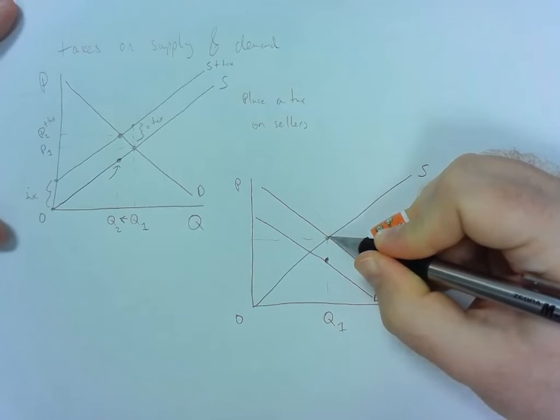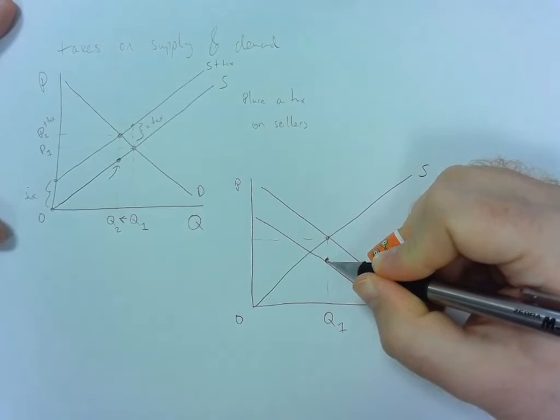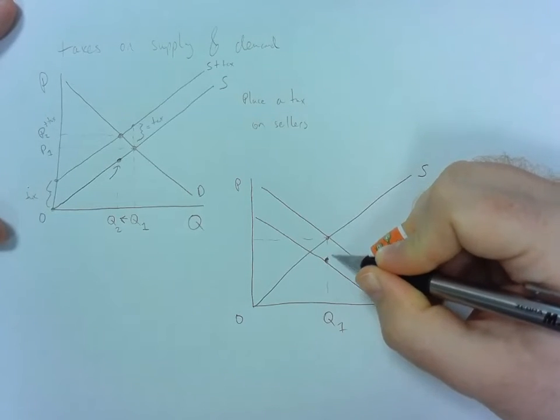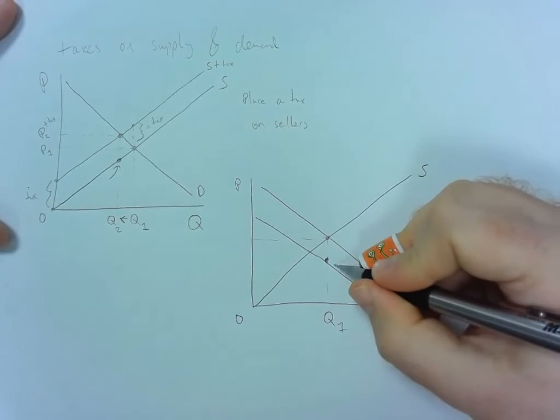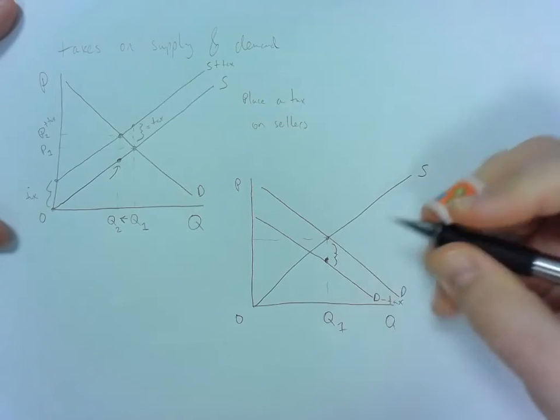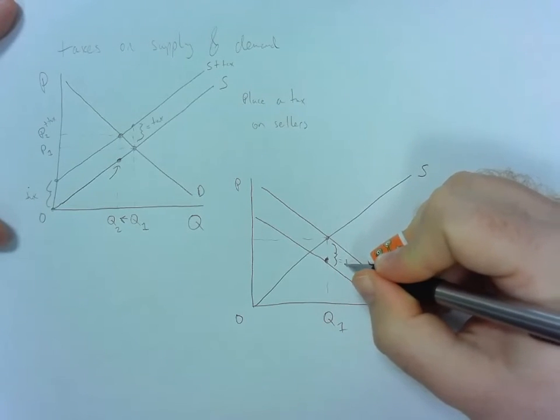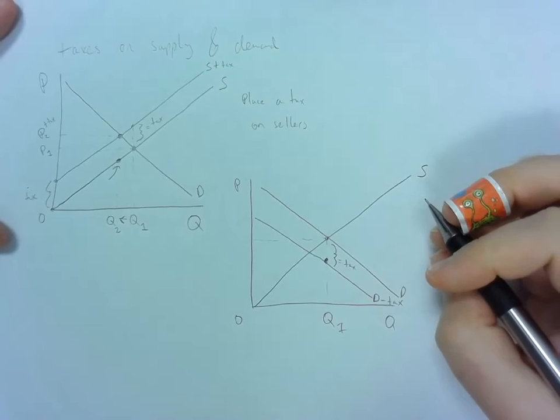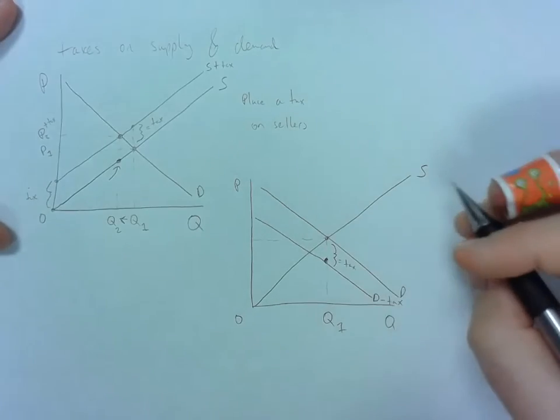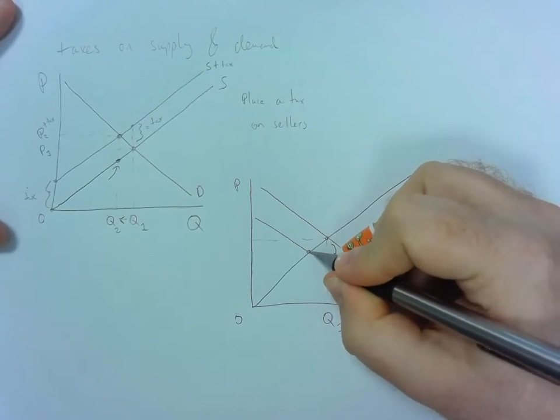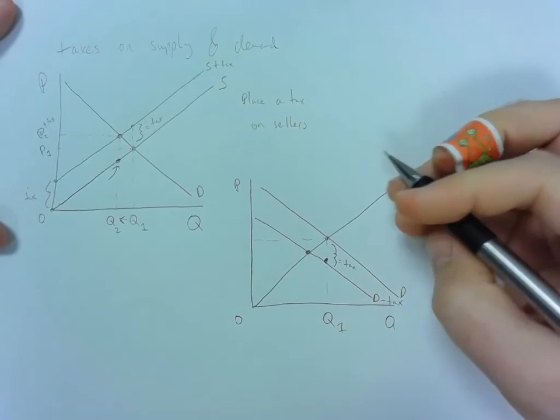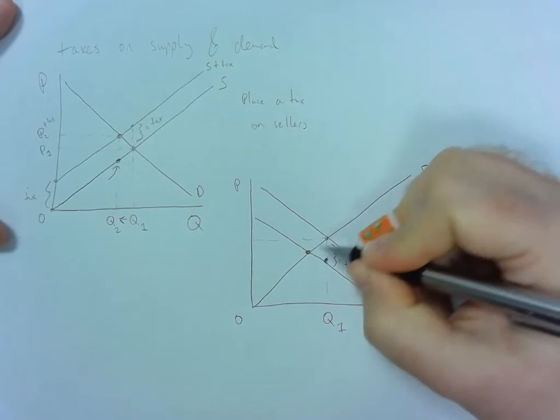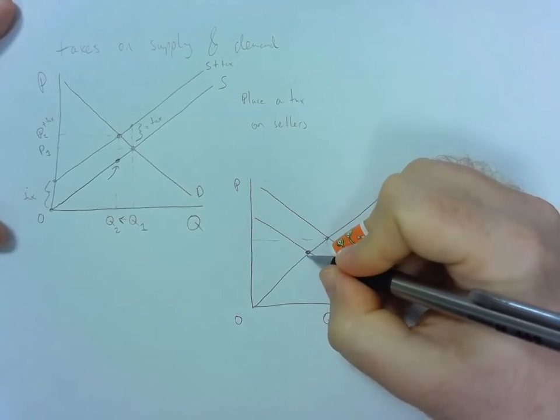So in reality, they're paying this price, but they have to lower their willingness to pay because they know that that tax is going to be added to them. So again, the magnitude of the shift is going to be equal to the tax that's placed on consumers. So what ends up happening is we have this new equilibrium, which is going to be where supply intersects this new demand with the tax.